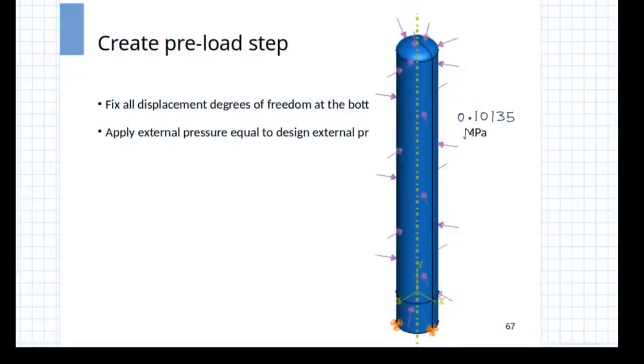The actual details of buckling analysis are not covered in this session. However, to just summarize, the first step is what is known as the preload state in which the model is subjected to the design pressure load. In this case, the external pressure is applied on the model with proper boundary conditions and the initial deformation of the model is obtained. This is used for the subsequent step which is known as eigenvalue analysis to determine the buckling load.